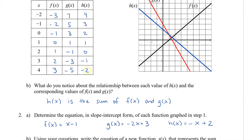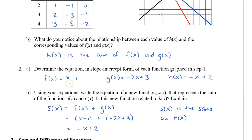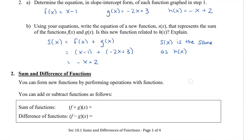The reason h of x matches is because when we add the y values of f of x and g of x, we get the y values for h of x — the same as adding the two functions algebraically. So x minus 1 plus negative 2x plus 3 gives us negative x plus 2. This leads us to finding the sum and difference of functions. You can form new functions by performing different operations. When you add functions together, we write this as (f + g)(x), which equals f of x plus g of x. And (f − g)(x) equals f of x minus g of x.